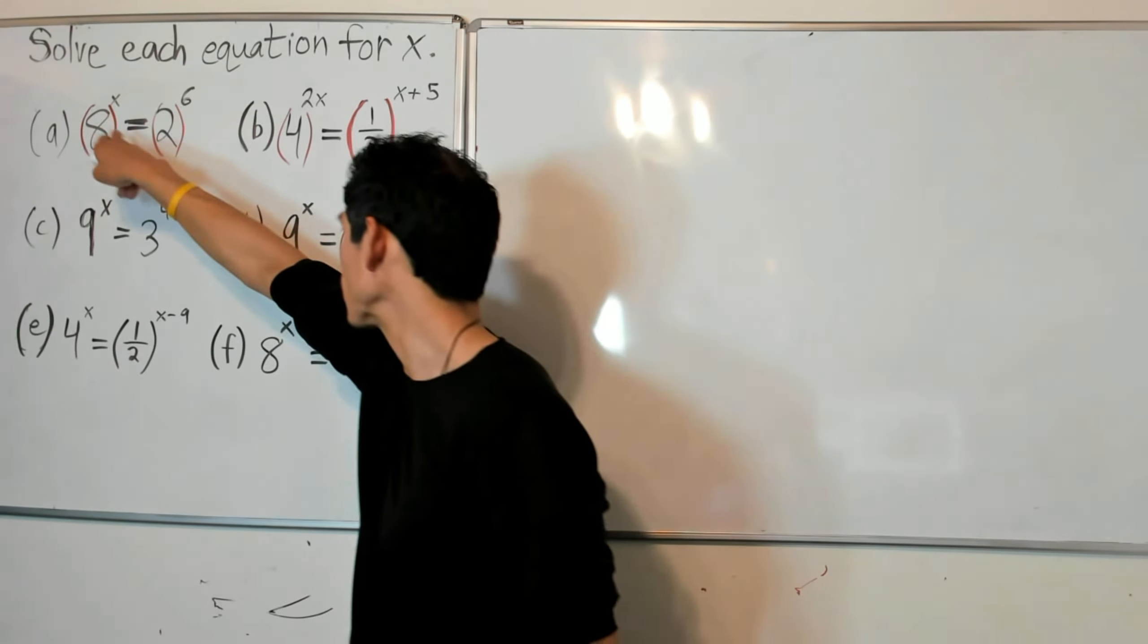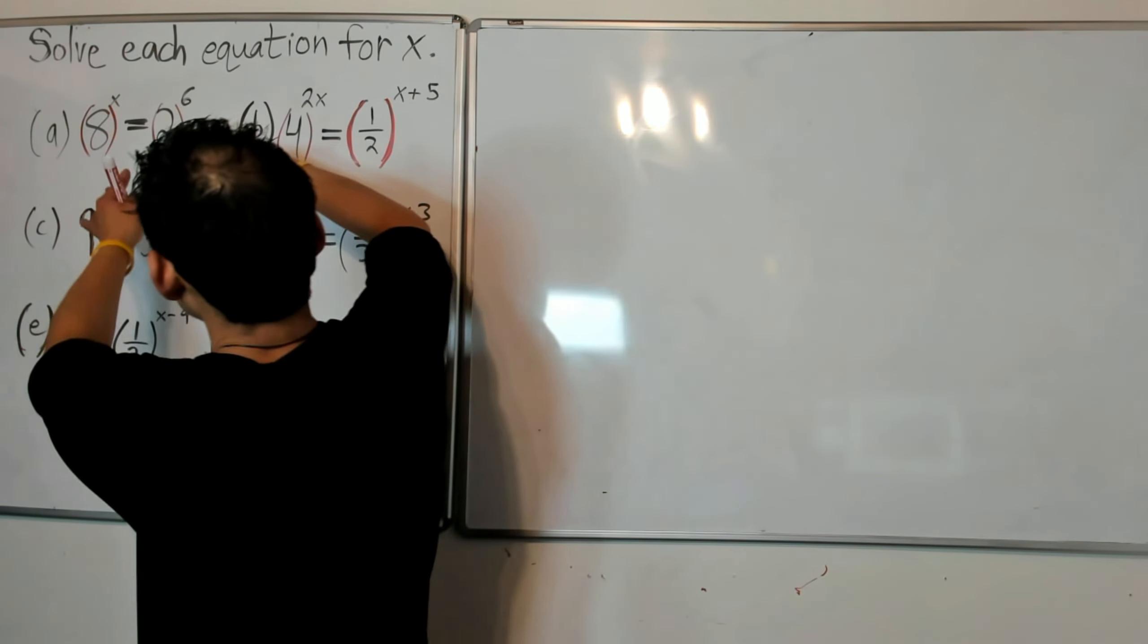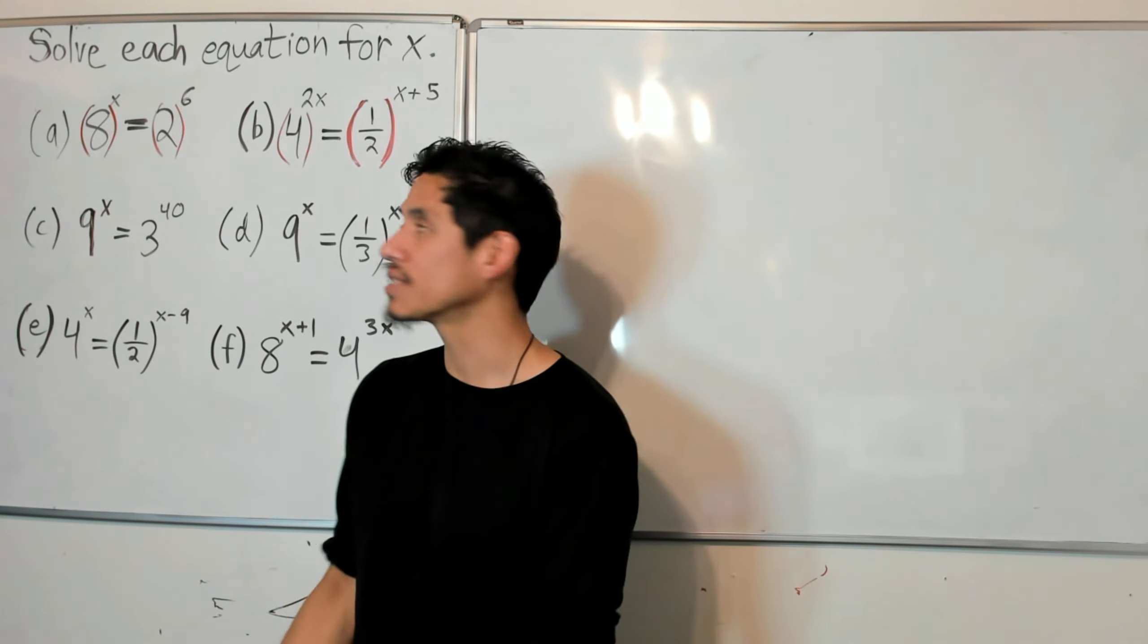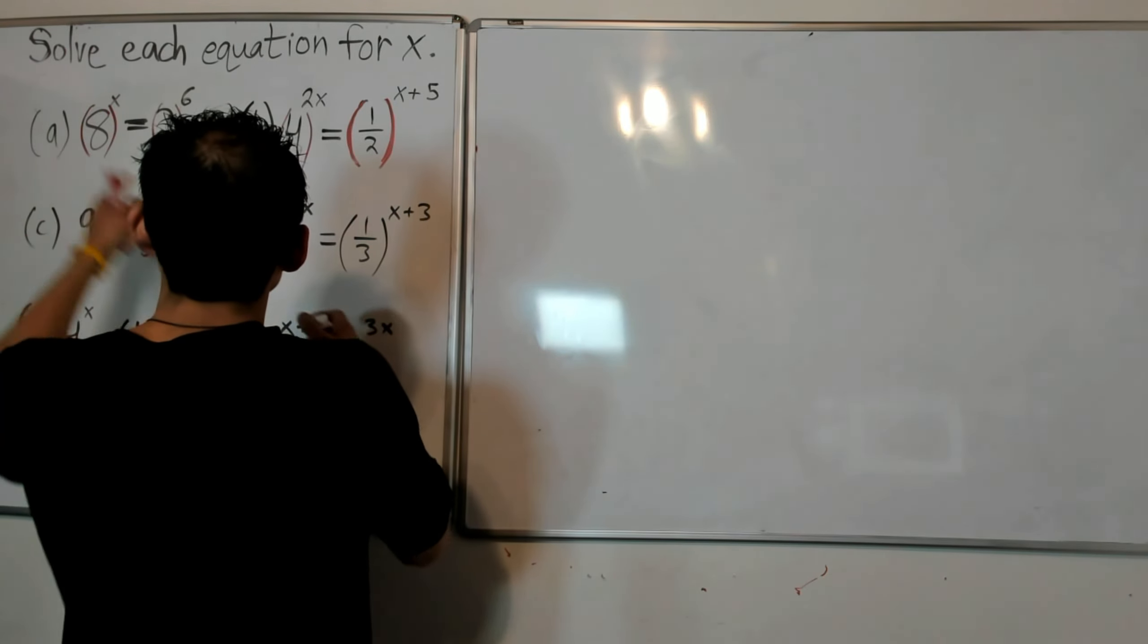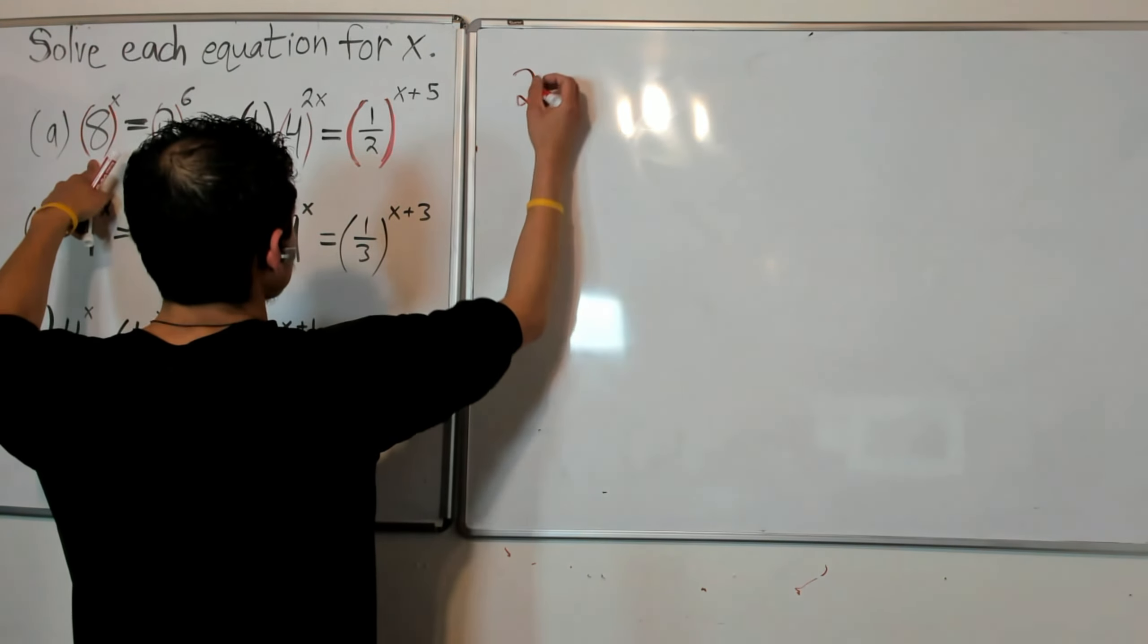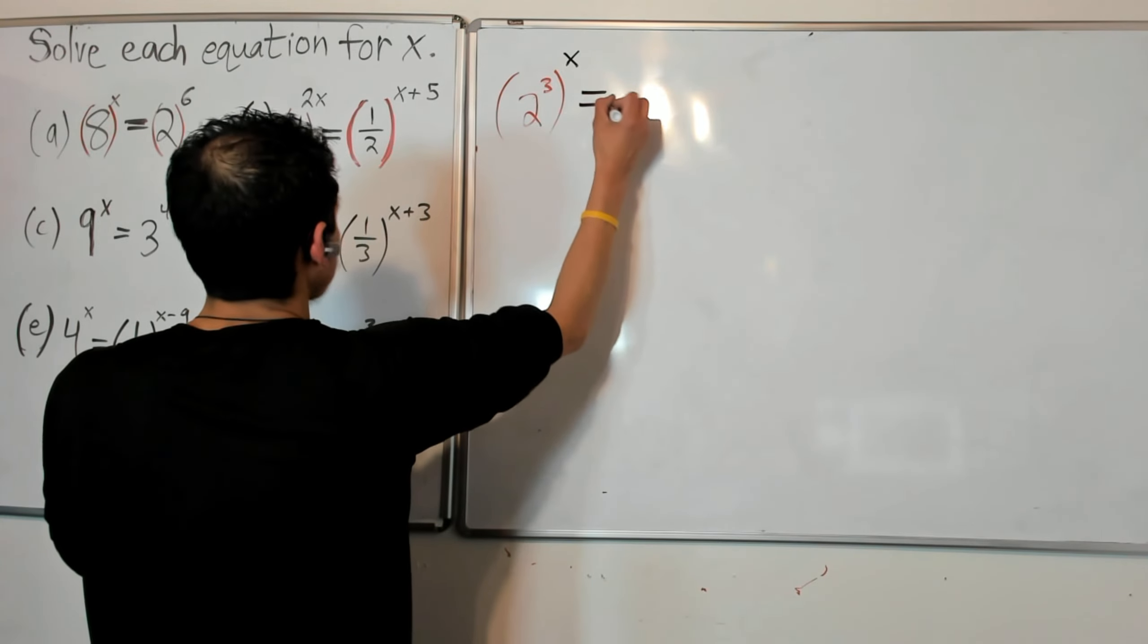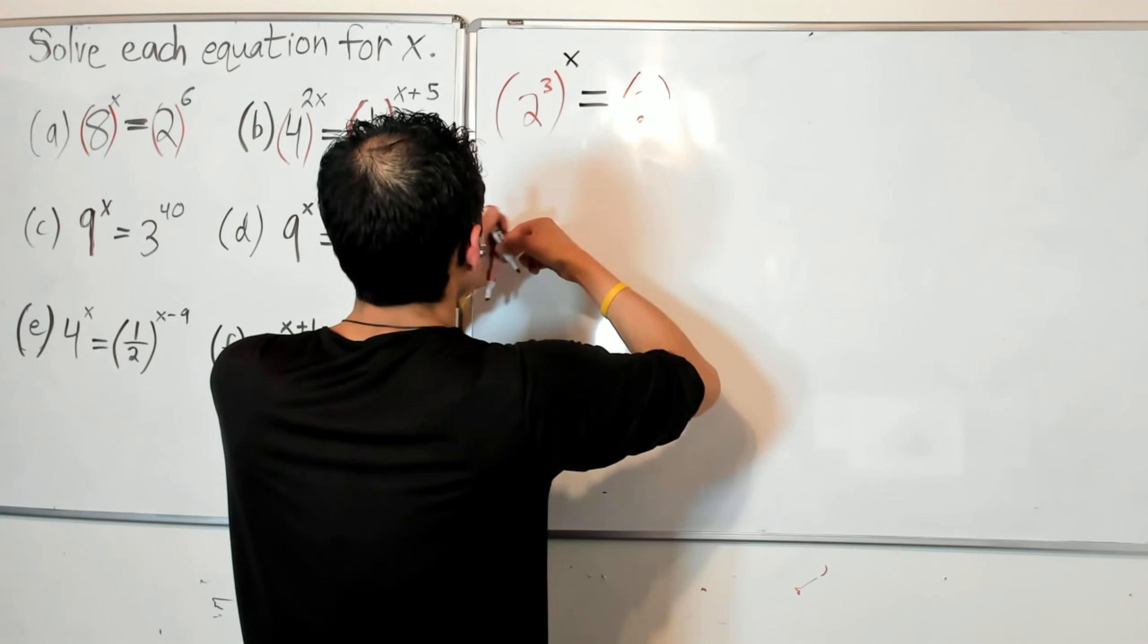So let's look at the first one. 8 to the x power equals 2 to the 6 power. One of the strategies is to make the bases the same. You have to kind of just think, what do 8 and 2 have in common, what number can they both be written as? Well, let me just show you. We should know that 8 is the same as 2 to the 3. So 2 to the 3 is the same as 8. I have this on the left, and on the right I just have my 2 to the 6.